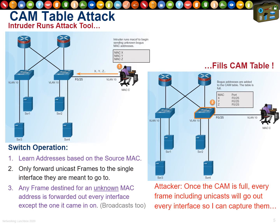If I'm a naughty person, I send 100 million frames all with a unique MAC address. The switch memory fills up and it's unable to learn new MAC addresses. So when server 2 tries to have a private conversation with server 4, the switch can't learn those addresses and must broadcast that frame out every single interface — including the interface where Mr. Naughty Person lives. He's basically turned the switch into a hub, so all private traffic is now visible to him.